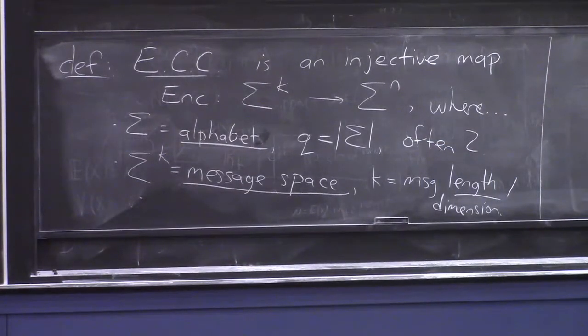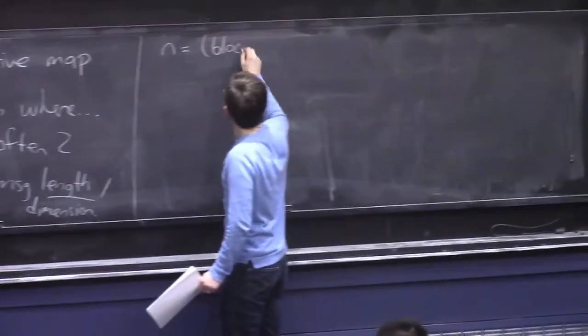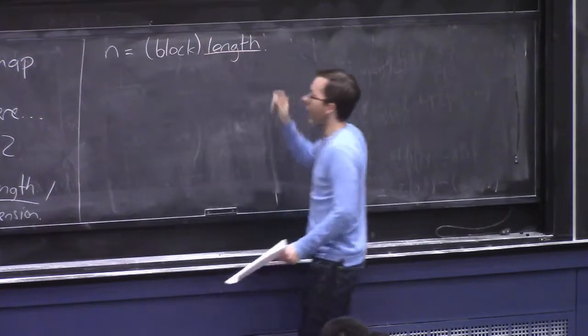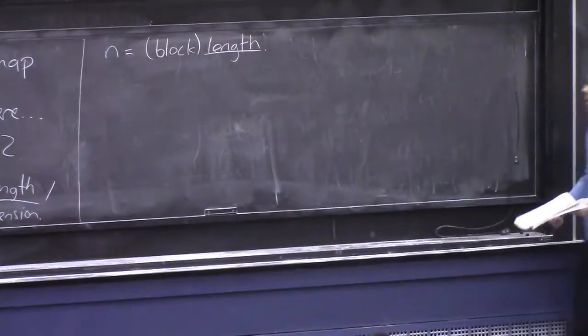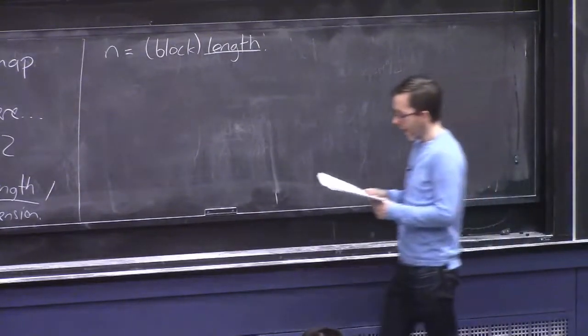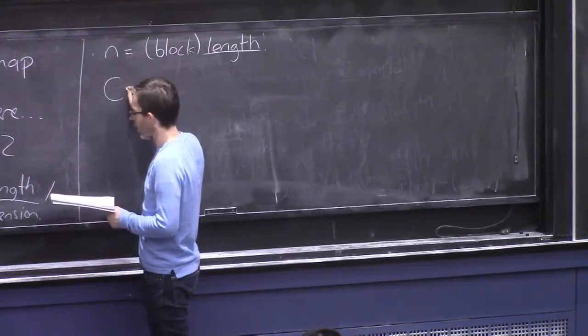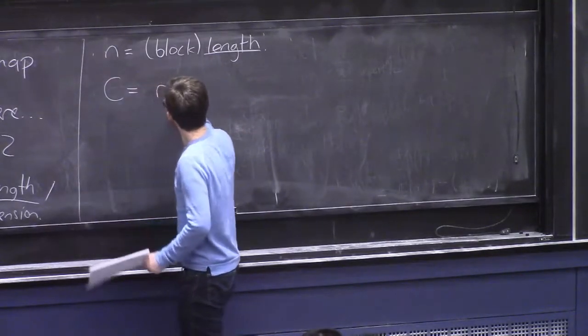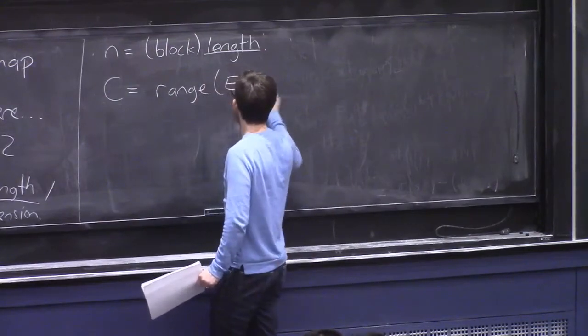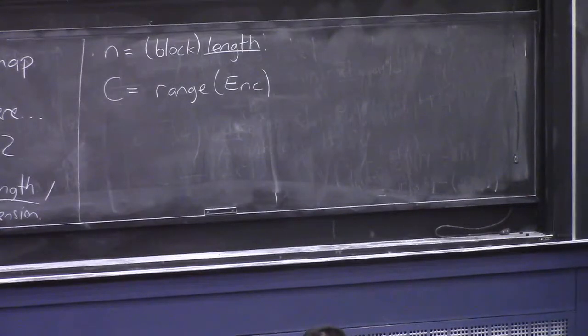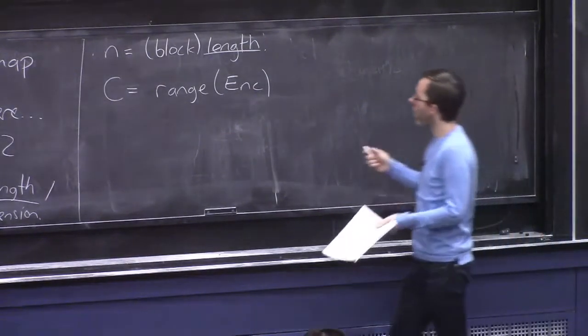So that's the input. The encoding mapping is encoding some message of length K. The output length N is called just the length, or the block length. This will naturally be at least as large as K. We're not trying to compress anything here. And furthermore, we're going to specifically be interested in the range of this encoding map, so all the possible things that it may output. And we'll call that set of N character strings C. And this is sometimes called the code itself.